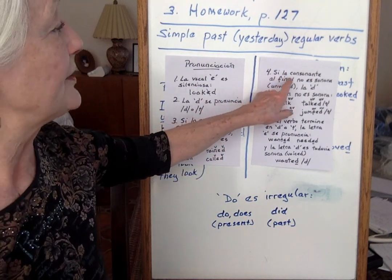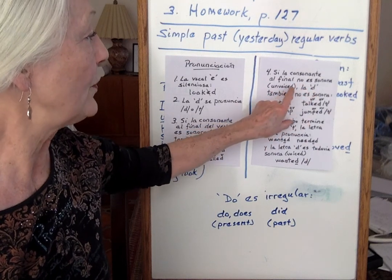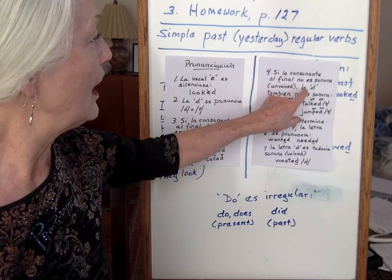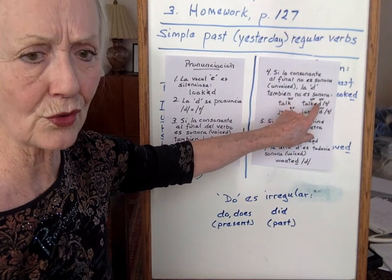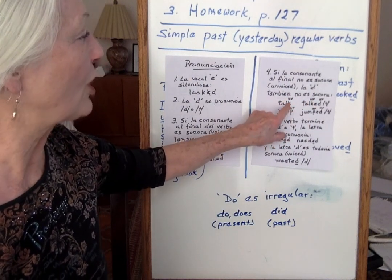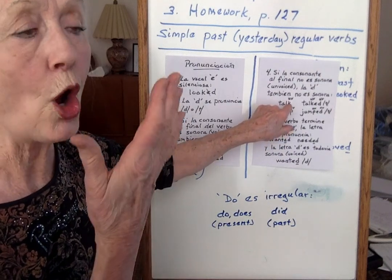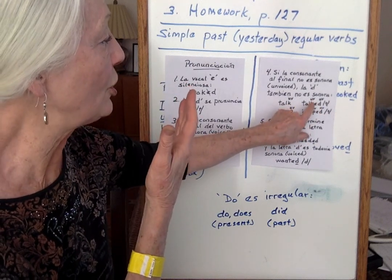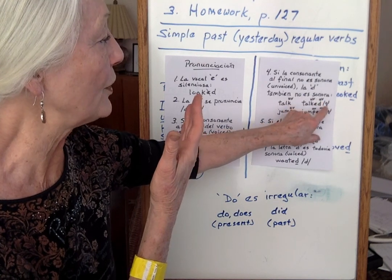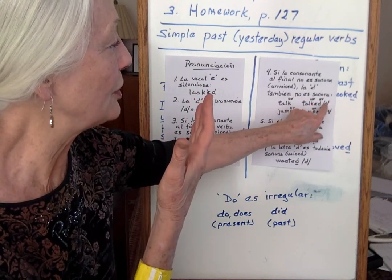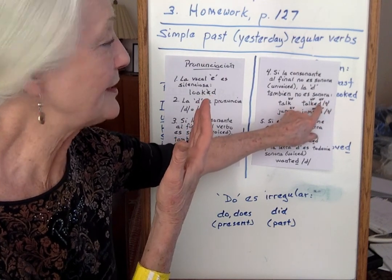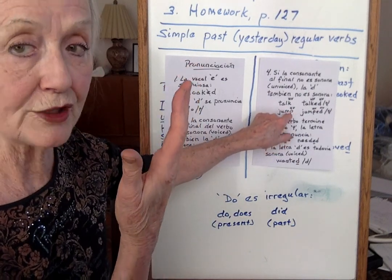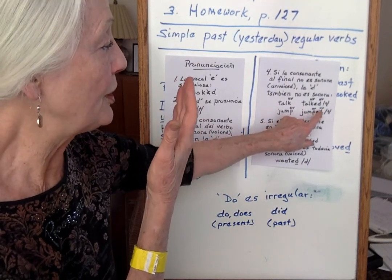Si la consonante al final no es sonora — if it's unvoiced, like P, T, C, S, F — la letra -d también no es sonora. So here we have 'talk' — the K at the end is unvoiced — so this will be 'talked', pronounced with a T. Here you have 'jump' — the P is unvoiced — so 'jumped' is pronounced with a T.